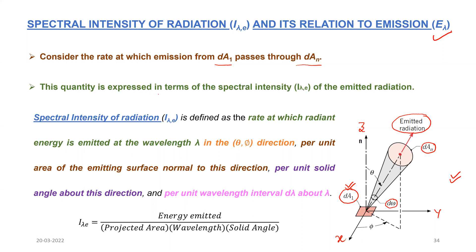This quantity is expressed in terms of spectral intensity i_lambda_e. Here 'e' stands for emission, 'lambda' stands for spectral, and 'i' stands for intensity. Spectral can also be said as monochromatic. So i_lambda_e is the spectral intensity of the emitted radiations.